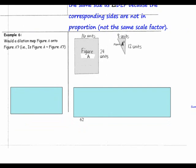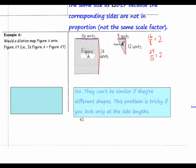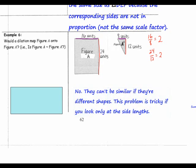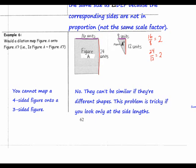Example 6. Would a dilation map figure A onto figure A prime? That is to say, is figure A similar to figure A prime? Let's take a look at the corresponding sides: we have 16 and 8, and 24 and 12. Notice that these have a ratio of 2. However, are they the same shape? No — they can't be similar if they're different shapes. This problem is tricky if you look only at the side lengths, so remember to look at the shape as well. You cannot map a 4-sided figure onto a 3-sided figure.